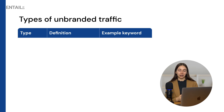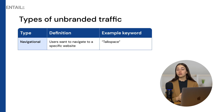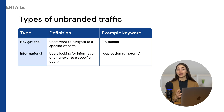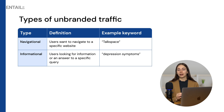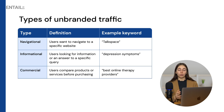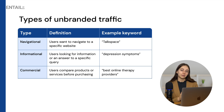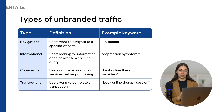We can break unbranded traffic down into four further types. First, we have navigational, which is when users want to navigate to a specific website, like Talkspace for example. Second, we have informational, where users are looking for specific information or the answer to a specific query, like what are the symptoms of depression. Third, we have commercial, where users want to compare products or services when deciding to make a purchase, so they could search for something like the best online therapy providers. And finally, we have transactional, which means that users are ready to make a transaction, like booking an online therapy session.